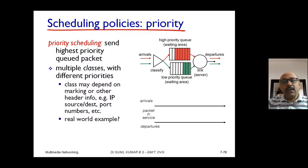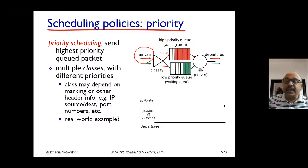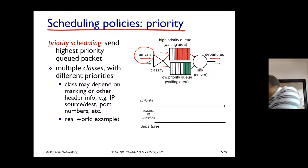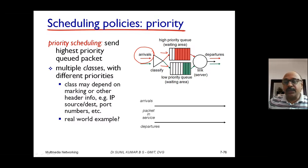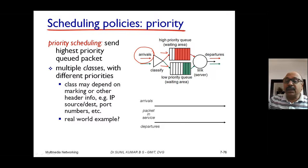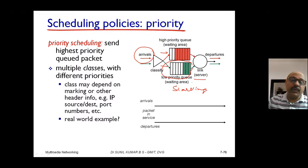Priority plays a very important role. Arrived packets are classified on the basis of their priority — one queue for high priority, another for low priority. High priority packets are always serviced first, and once completed, service moves to the low priority queue. The problem here is that the high priority queue may always occupy the server, so the low priority queue may never be serviced. This is called starvation, and we need to overcome it.